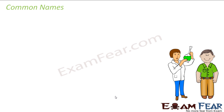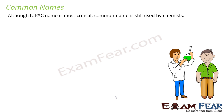Now let's understand common names. We have been talking that carbon compounds have some common names, and chemists still call some of the carbon compounds with these common names. Although the IUPAC name is most critical, the common name is still used by chemists.